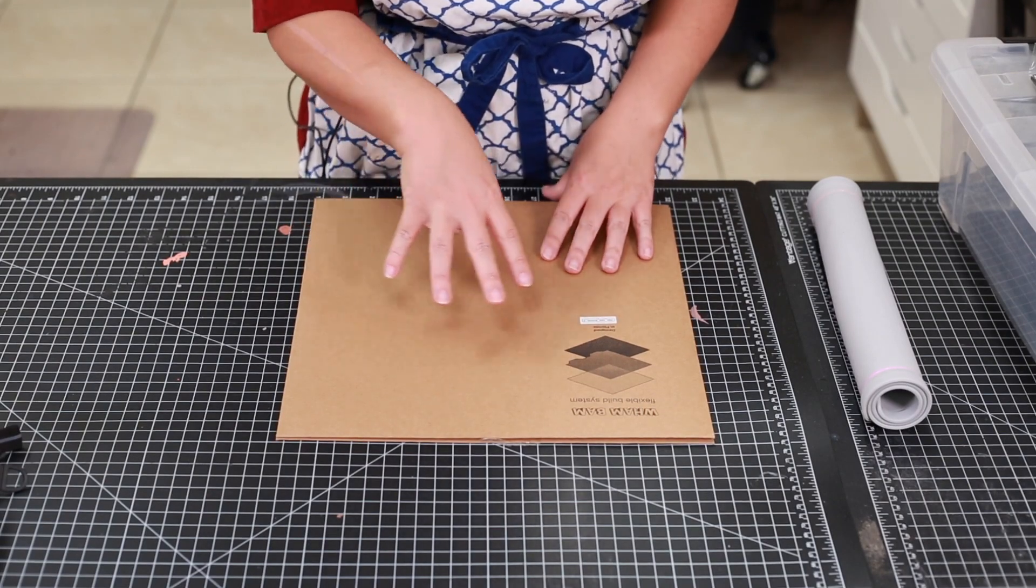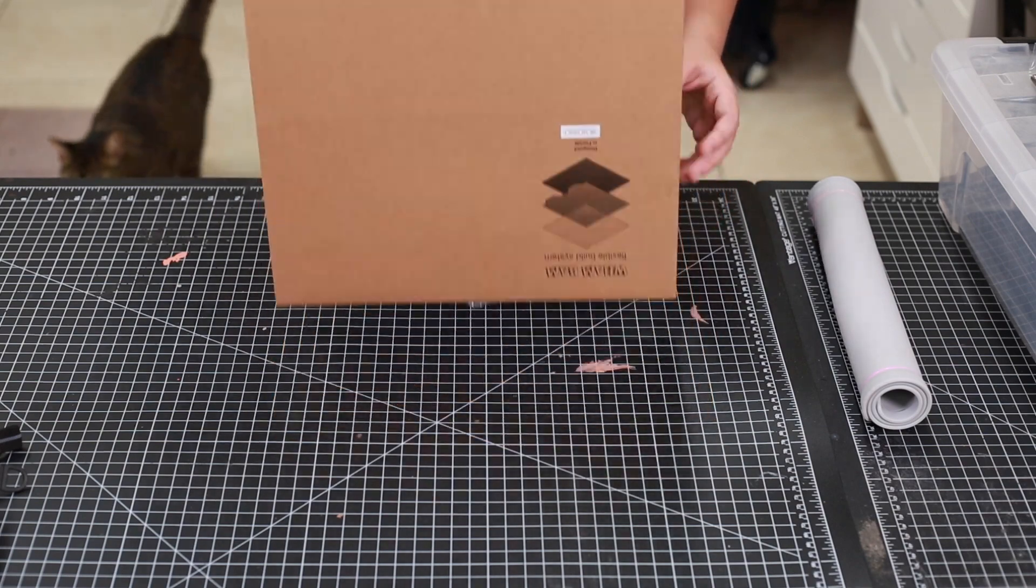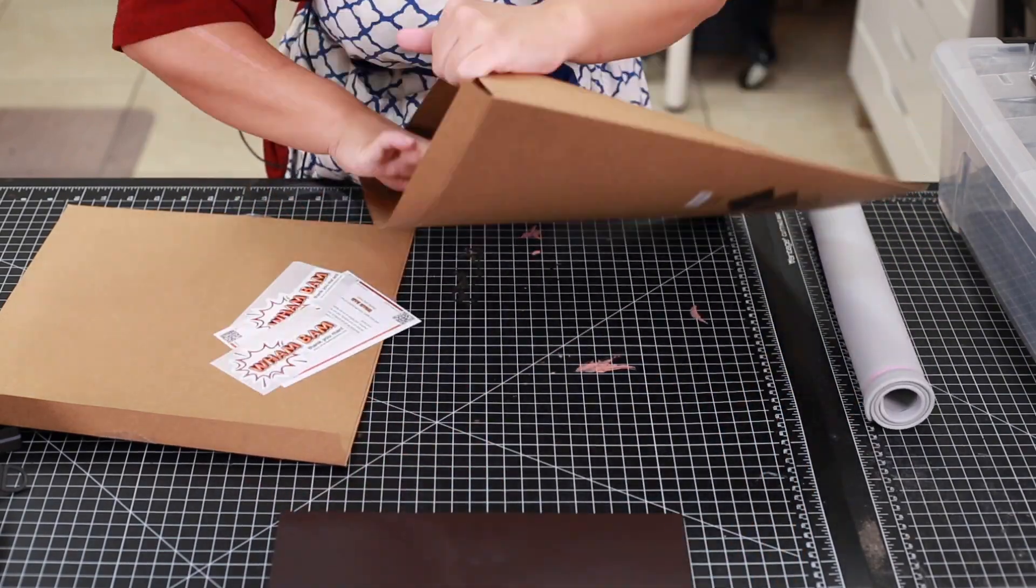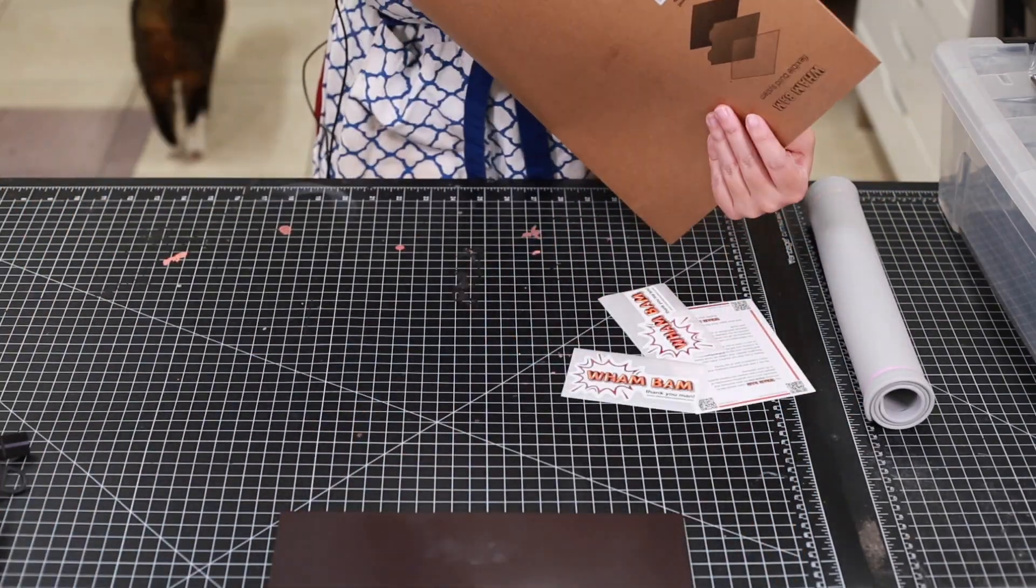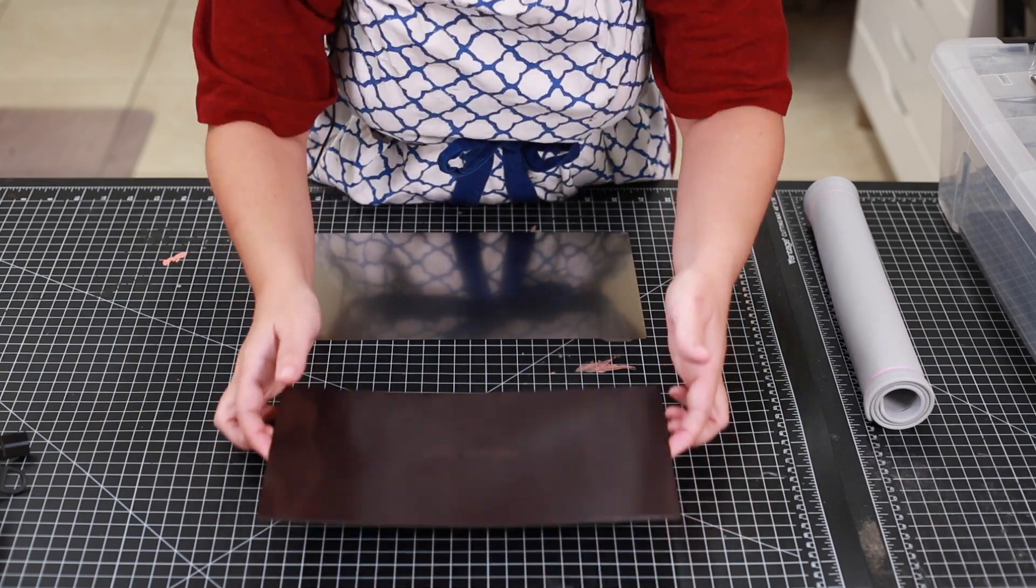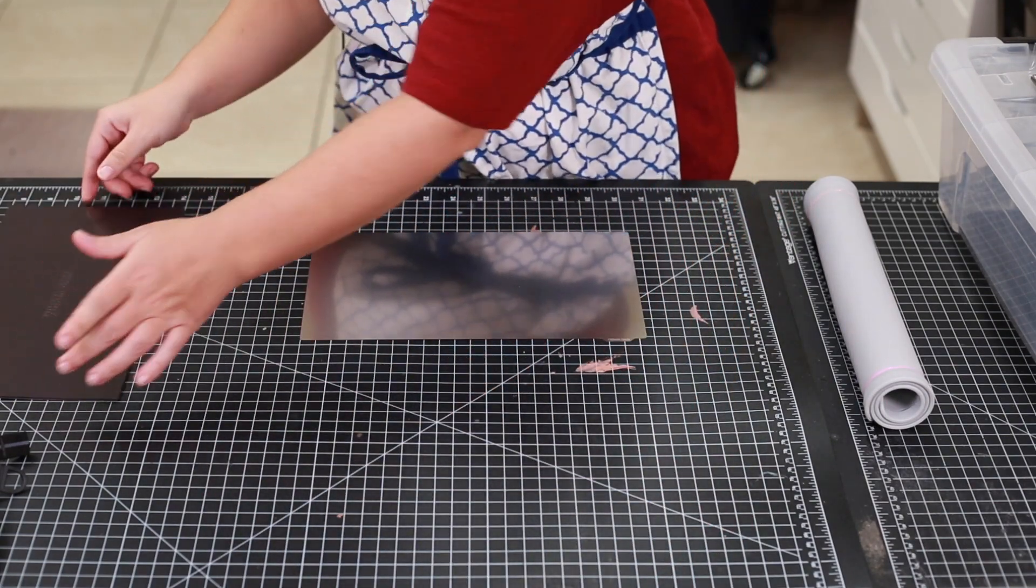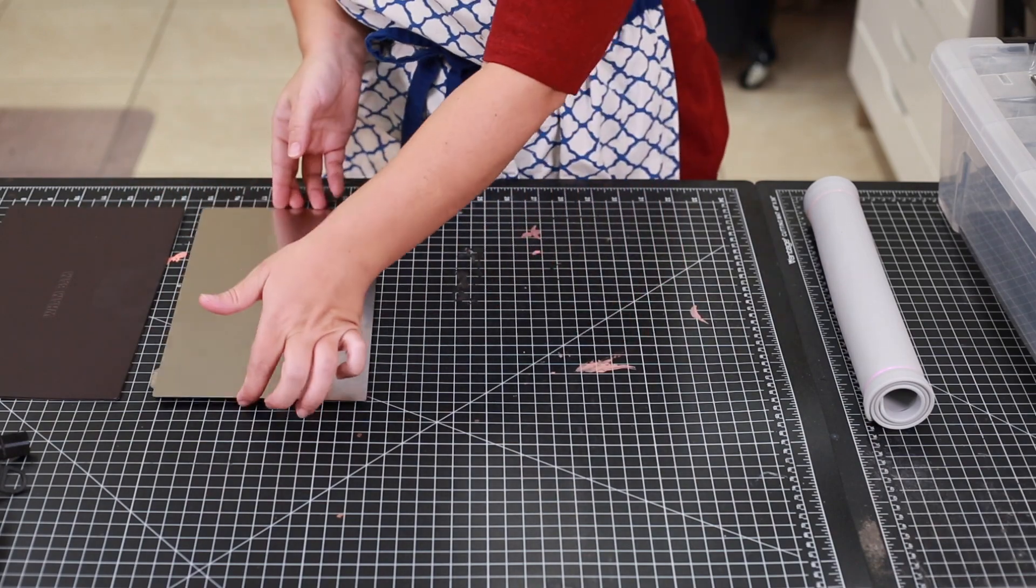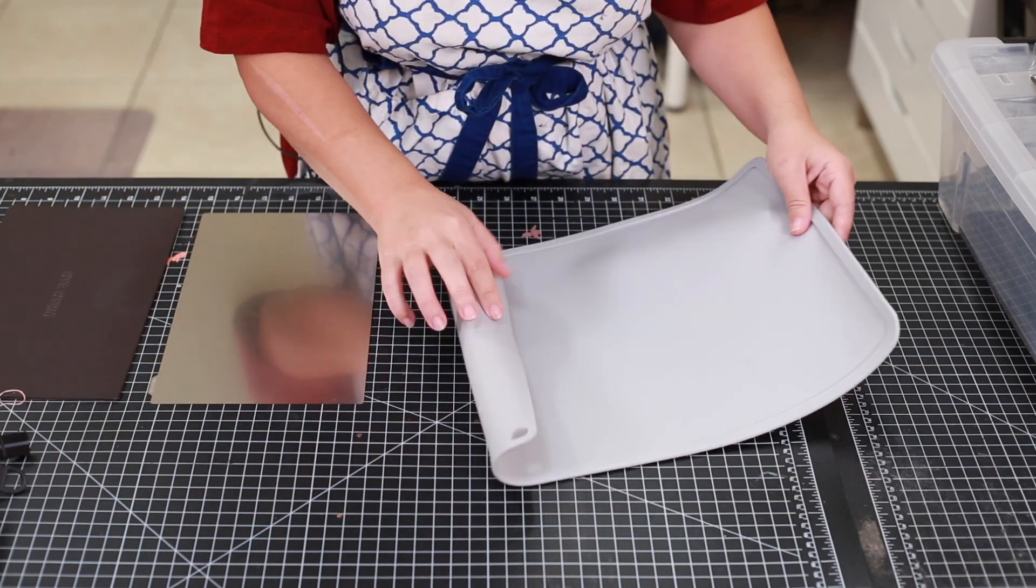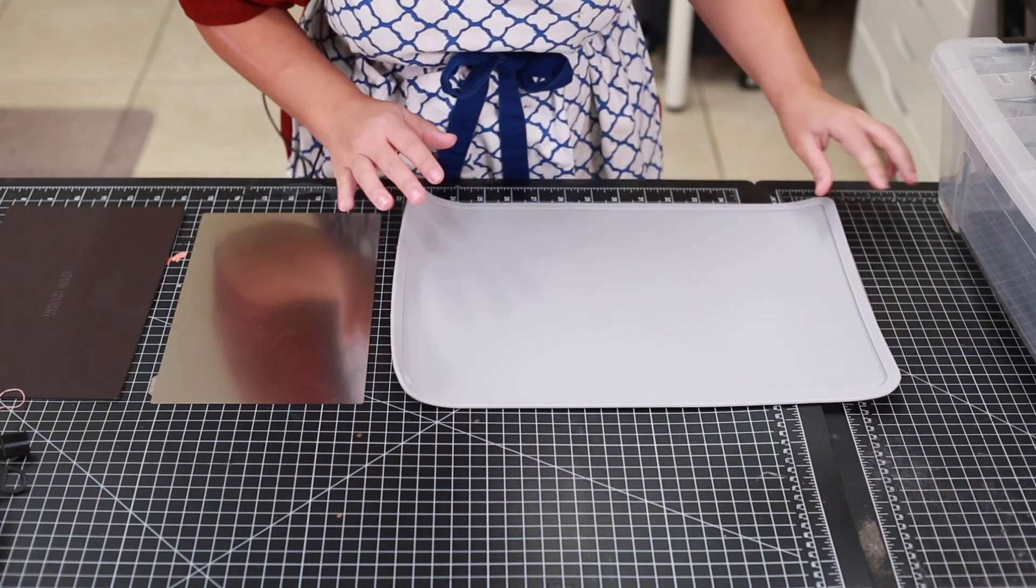All right, so you've got the Wambam plate here and it should have everything in it as well as the 220 sandpaper. So I have these two pieces and pretty much the same as the Saturn if you did watch the video. I also have this silicone mat that you can also get through Wambam or wherever you want to get your silicone mat from.